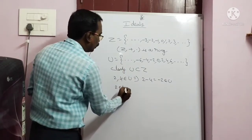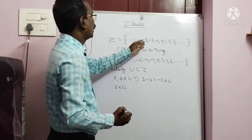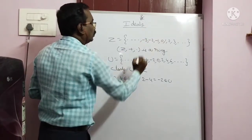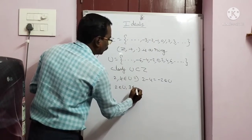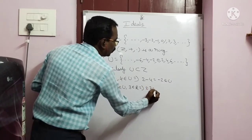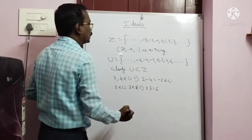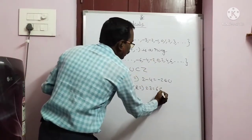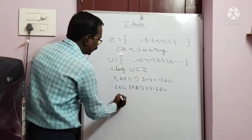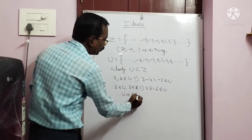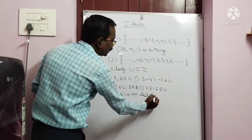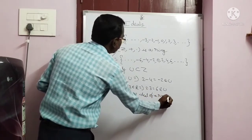So first point is satisfied. Now, 2 belongs to U. So two points are satisfied. U is an ideal of ring Z.